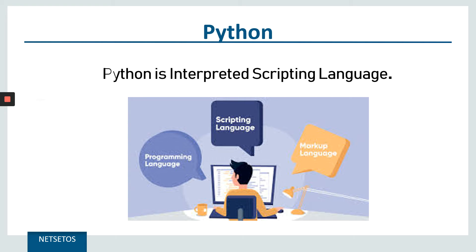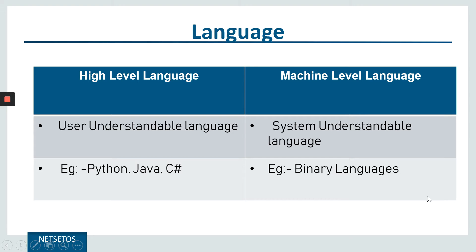Python is an interpreted scripting language. Let's look at this closely, word by word: interpreted, scripting, and language. Language is something that we use to communicate — whether with animals, human beings, or computers. In terms of software, language is something that a computer understands. It is basically a source to develop software, and it is of two types: high-level language and machine-level language.